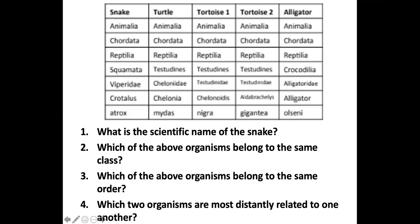So what is the scientific name of the snake? Remember, this takes us back to our classification system. You've got King Philip came over for good spaghetti — so kingdom, phylum, class, order, family, genus, species. To find the scientific name, you have to look for the genus and the species. So this is what you would put for the scientific name.